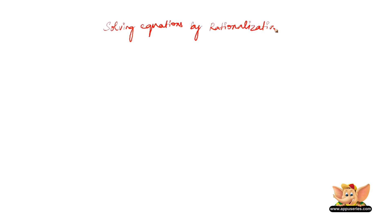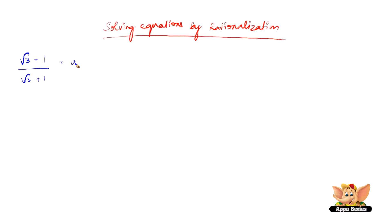Let us now see solving equations by rationalization. Let us take an example which is (√3 - 1) / (√3 + 1) = a + b√3. So all we have to do is find the values of a and b. In order to do that, we first simplify or rationalize it.